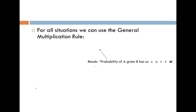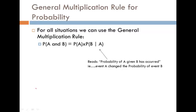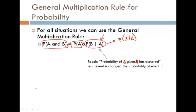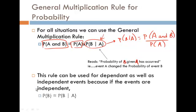Using the general multiplication rule, the probability of A and B occurring is the probability of A times the probability of B given A. If we're trying to calculate the conditional probability B given A, that is the probability of A and B divided by the probability of A. That's the rule we're going to use for conditional probability.